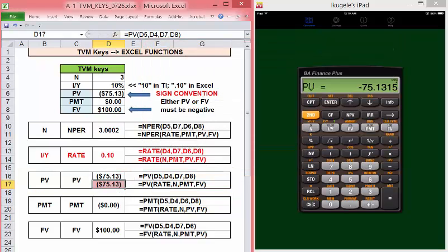The five TVM keys and their cell functions will be used throughout this class, so be sure you're comfortable with using them. And remember the sign convention. It applies to present value, future value, and payment.